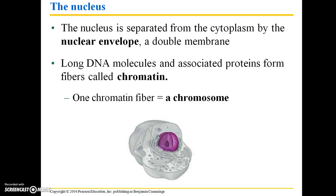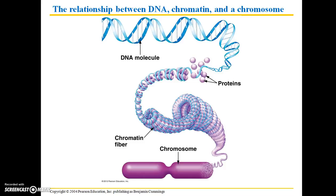When we talk about mitosis and meiosis, you'll become much more familiar with the terms chromosome and chromatin. This is just a depiction of the relationship between a DNA molecule, chromatin, and a chromosome. Here we have that nice double helix of a DNA molecule, consisting of the sugar-phosphate backbone as well as the nitrogenous bases, with associated proteins. These form chromatin fibers, and a coil of these chromatin fibers makes up a chromosome.